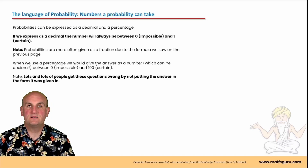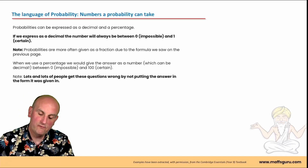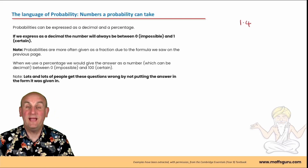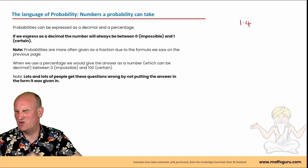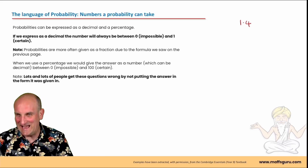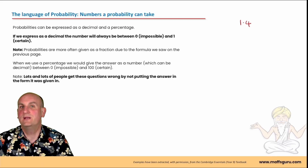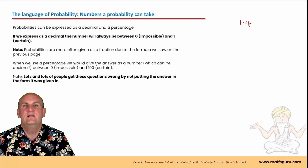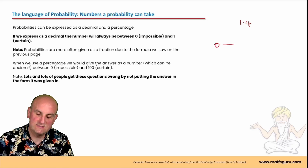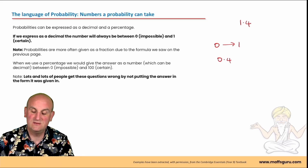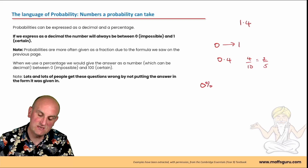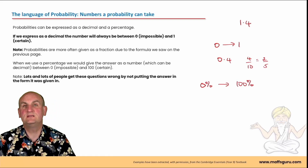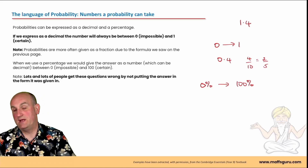Numbers of probability you can take: I've marked a methods exam once where somebody said they could have a probability of 1.4 - no. What is the maximum probability you can have? 1. What is the minimum? 0. Zero is no chance of it happening at all; 1 is absolutely certain. For example, is there going to be a day tomorrow? The probability that there will be another day tomorrow is 1. Probabilities can go between 0 and 1, and they can be decimals - so I can have a probability of 0.4, or write that as 4 on 10 which we cancel down to 2 on 5. We can have decimals, fractions, and percentages - from 0% all the way up to 100%.